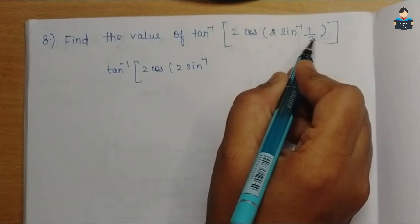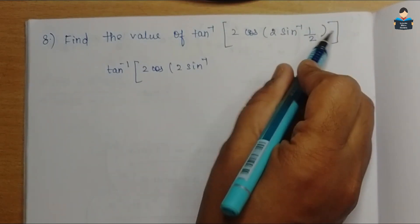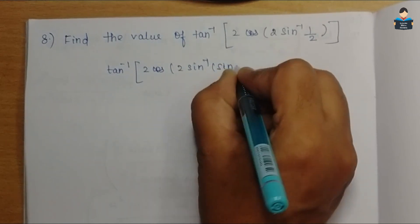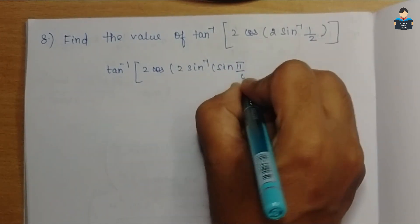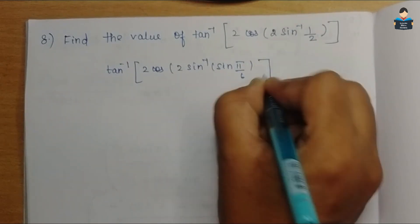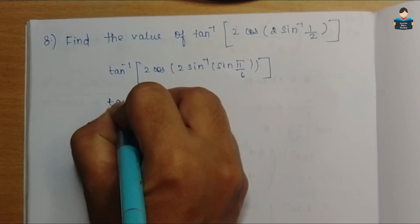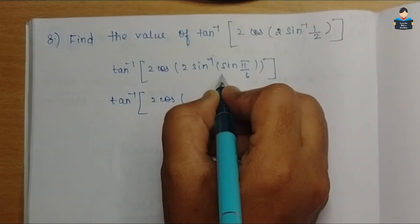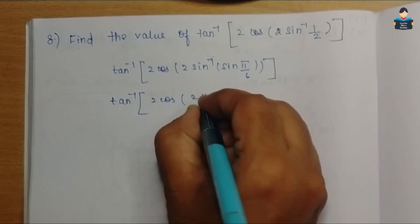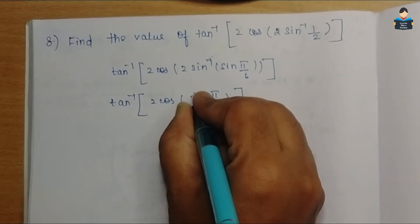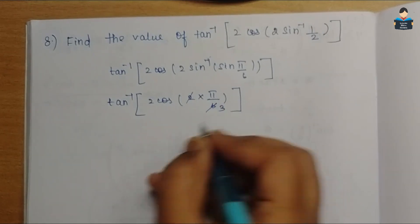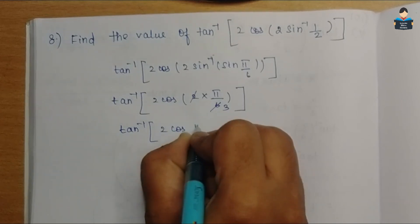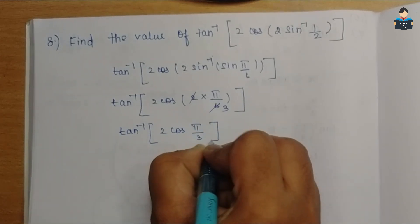sin 30° equals 1 by 2, so sin inverse of 1 by 2 equals π by 6 in radian form. Now we have tan inverse of 2 cos(2 × π by 6). The sin inverse and sin cancel, giving 2 × π by 6, which simplifies to π by 3.